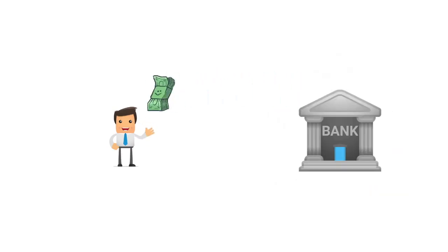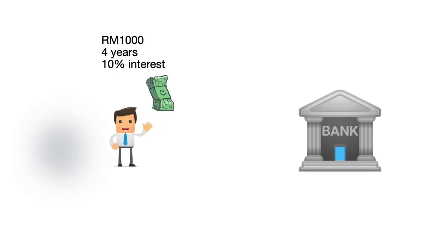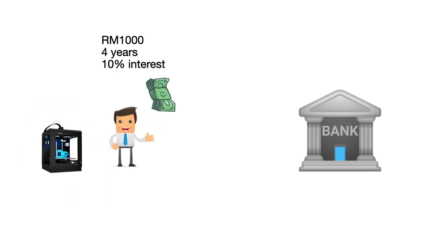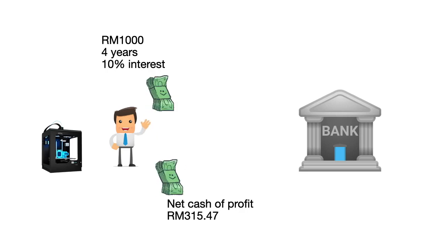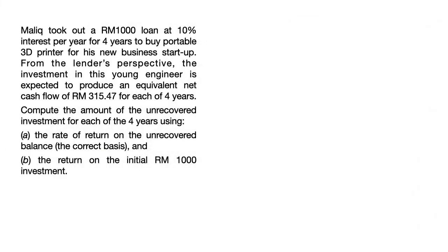You see, the amount of interest changes for every time period as it is based on the unpaid balance, not the principal amount. Let's look at how we can apply the calculation for the rate of return. Malik took out a RM1,000 loan at 10% interest rate per year for four years to buy a portable 3D printer for his new business startup. From the lender's perspective, the investment in this young engineer is expected to produce an equivalent net cash flow of RM315.47 for each of the four years. Let us compare the calculation for the rate of return based on the unrecovered investment and based on the principal amount.